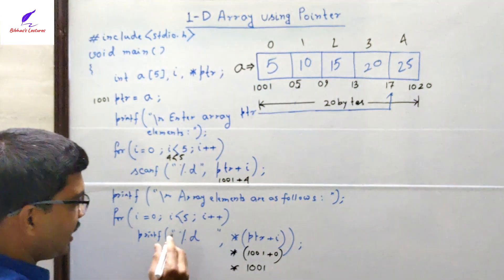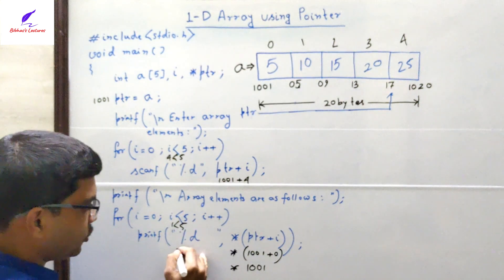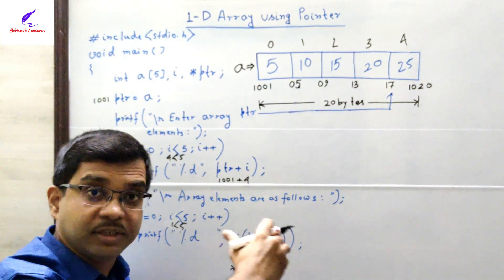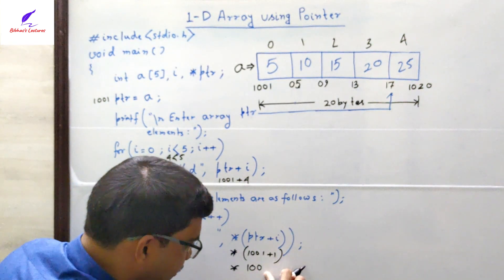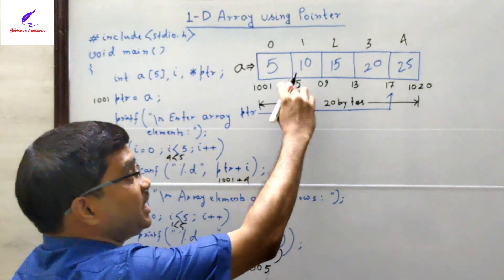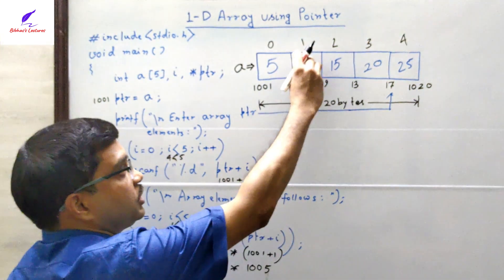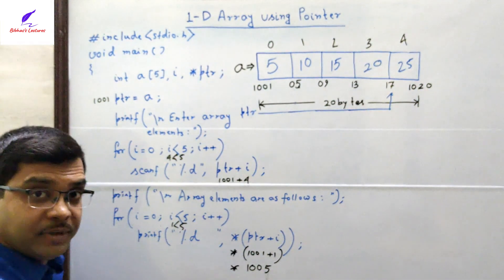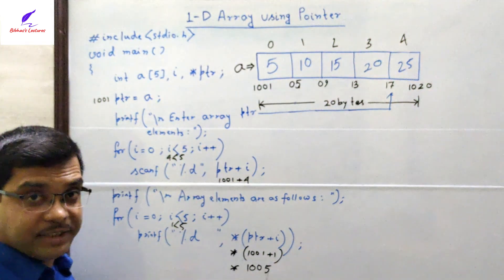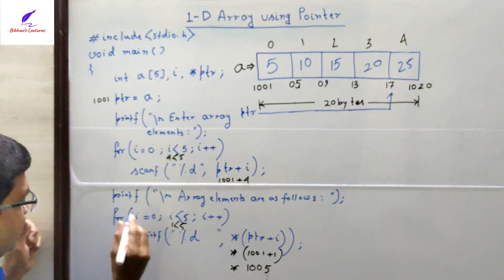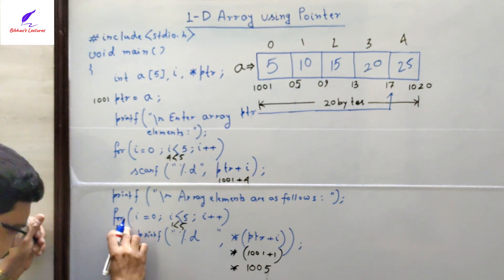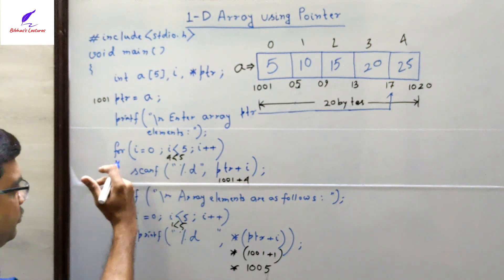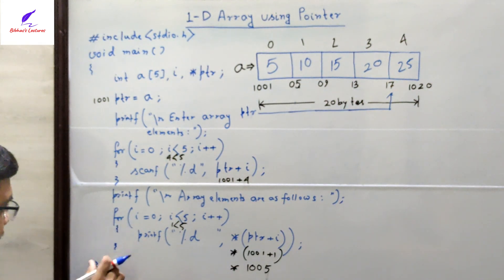When i = 1, ptr + 1 = 1005, so *(ptr + 1) prints the value at 1005, which is 10. Similarly, *(ptr + 2) prints 15 at 1009, *(ptr + 3) prints 20 at 1013, and *(ptr + 4) prints 25 at 1017. Since there is only one statement inside each for loop, the braces are optional. That is the end of the program.